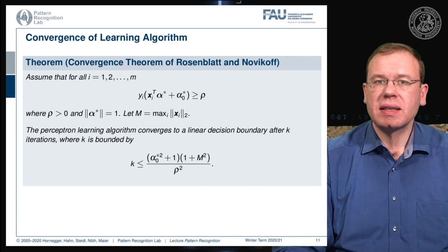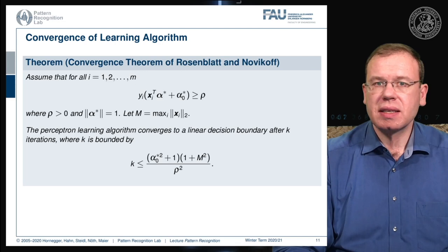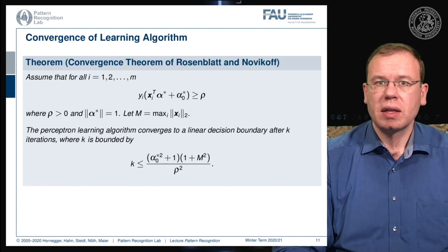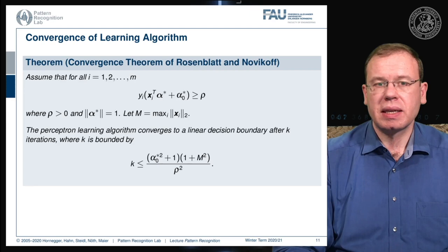They postulate a variable ρ as a scalar lower bound on the distance to the optimal separating hyperplane — a kind of margin. If the two point sets are far apart, ρ will be large; if they are close together, ρ will be small. This ρ is crucial for convergence. We also define α* to have norm one, and M as the maximum L2 norm appearing in the training data: M = maxᵢ ‖xᵢ‖₂. These quantities give an upper bound on the number of iterations k.